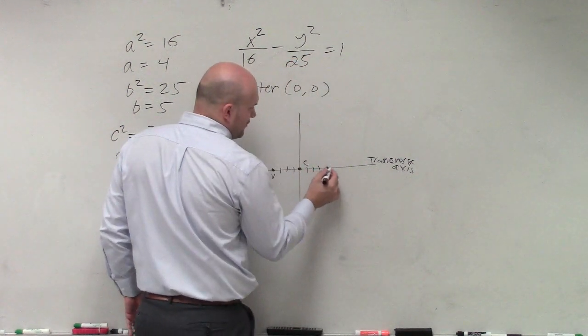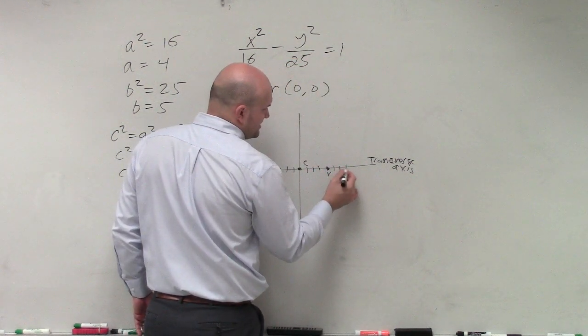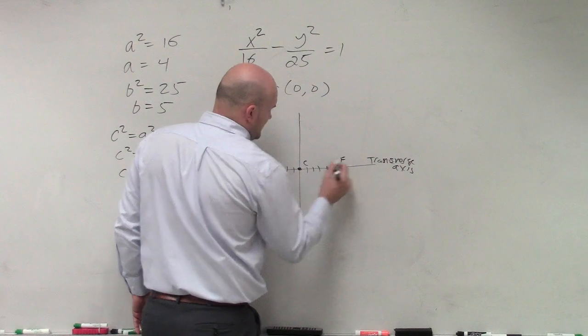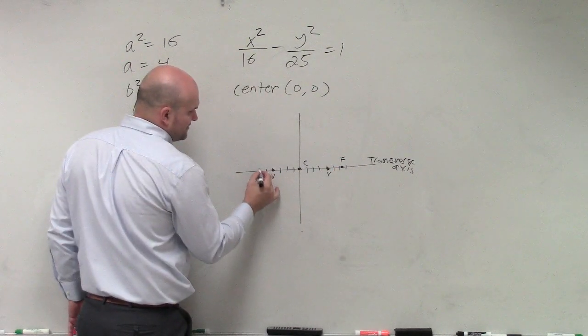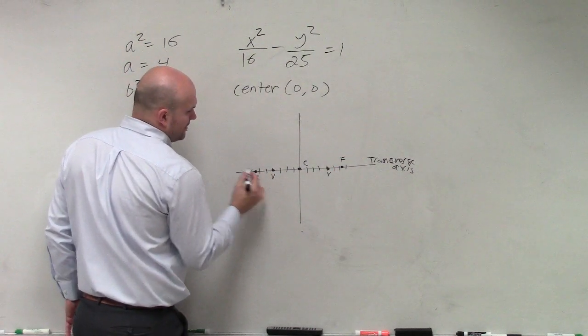Yes? So we'll just do 1, 2, 3, 4, 5, 6, 7. So between 6 and 7, foci, and 4, 5, 6, 7. OK?